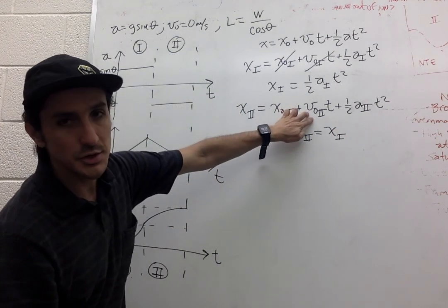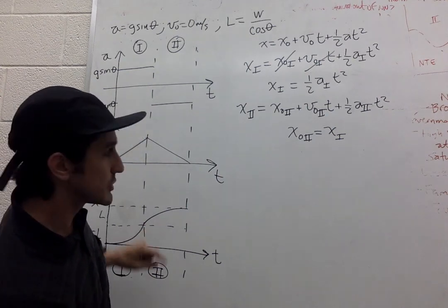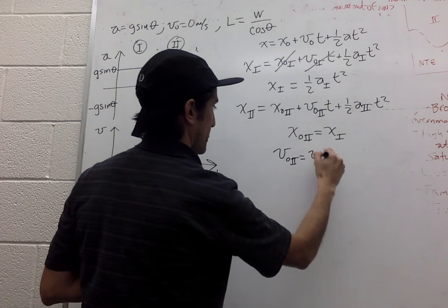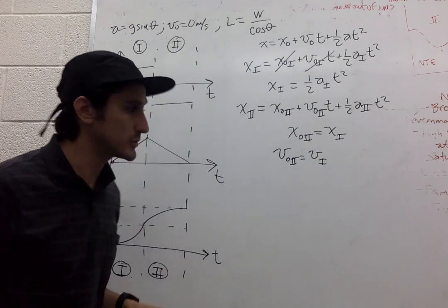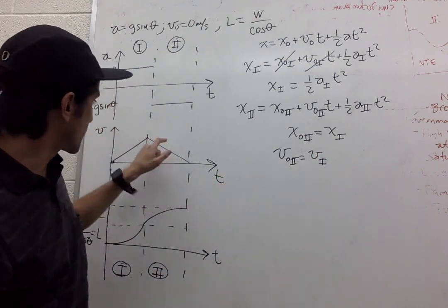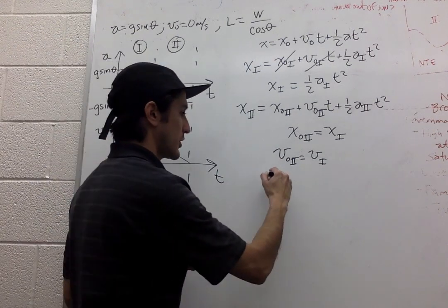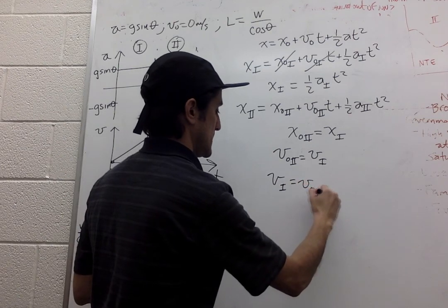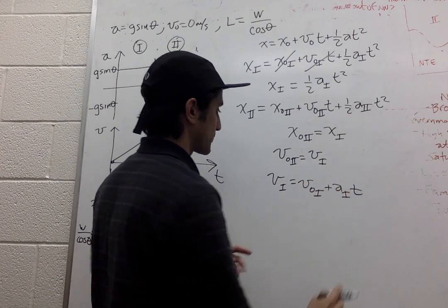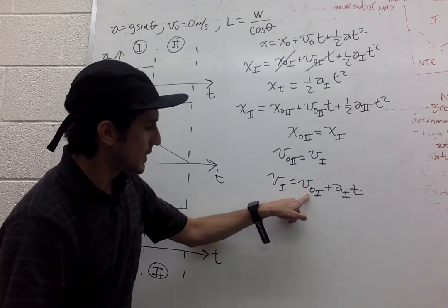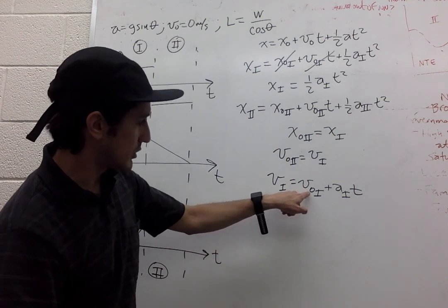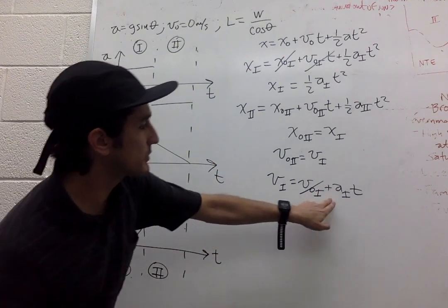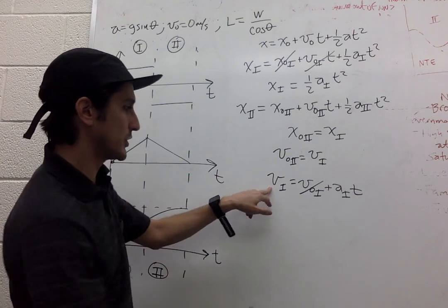So the initial velocity of segment 2 is the final velocity of segment 1. So now how can we get the final velocity of segment 1? Well, we can use our other kinematic equation. The initial velocity is 0, the acceleration is given over here. So vi is equal to a1 times t.